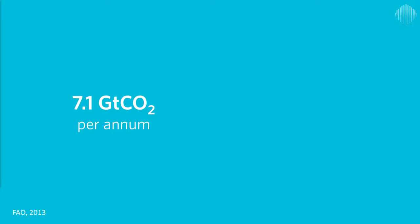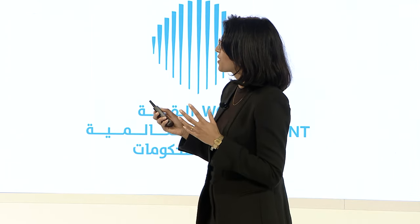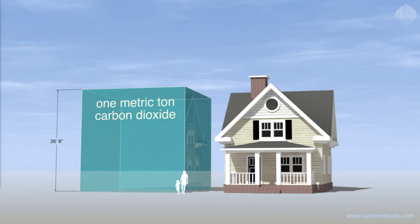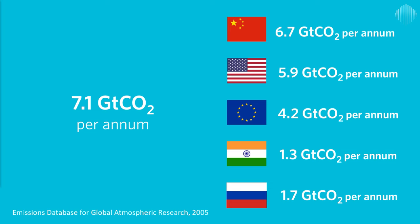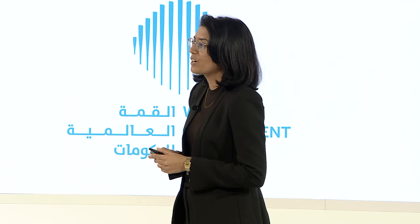The single number I want you to remember is 7.1 gigatons of carbon dioxide equivalents per annum — this is how much carbon dioxide equivalents are produced by animal agriculture every single year. Animal agriculture produces 7.1 billion metric tons of CO₂ equivalents every single year. When we compare that to fuel combustion, animal agriculture actually produces more greenhouse gas emissions than all fuel combustion in China per year, which is just incredible.